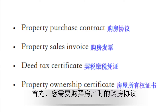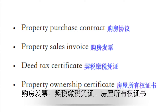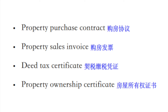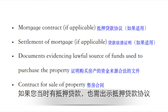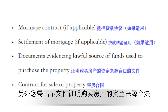To begin with, you're going to need the property purchase contract when you purchase the property, the property sales invoice, the tax deed certificate, the property ownership certificate, the mortgage contract if in fact you had a mortgage on the property, and the settlement of that mortgage if in fact you have paid off that mortgage. You'll need documents again,